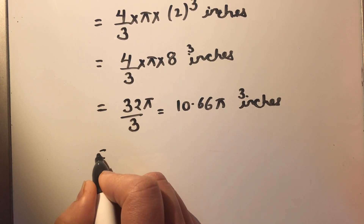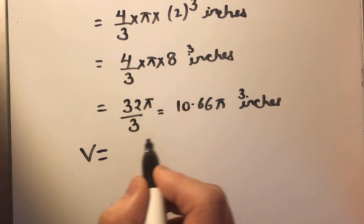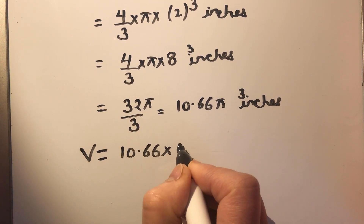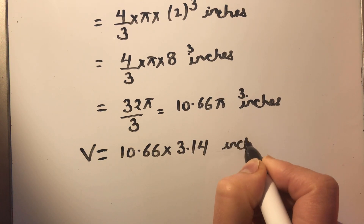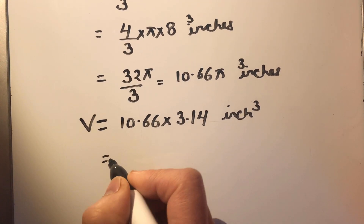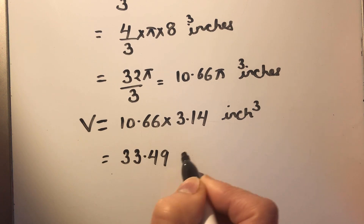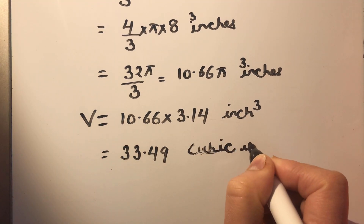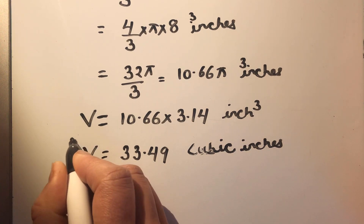So if we put the value of pi here, we have to multiply 10.66 by 3.14 inches cubed, so this will be equal to 33.49 cubic inches.